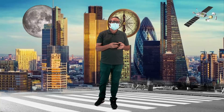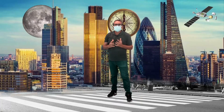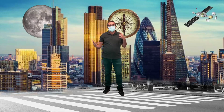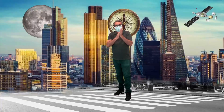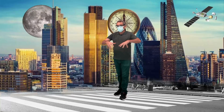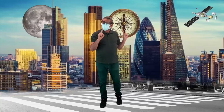Quando nós falamos de revolução industrial, nós temos de levar em consideração que essa revolução industrial transformou esse espaço que nós vivemos hoje. O espaço geográfico contemporâneo é resultante, em boa medida, das transformações pela revolução industrial. As atividades industriais, que ocorrem no interior das fábricas, desdobram posteriormente em outros setores, como transporte, comercialização e propaganda.